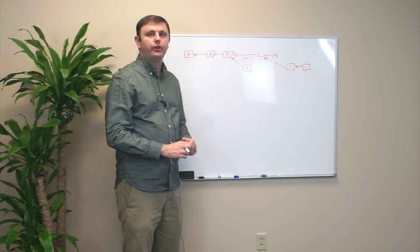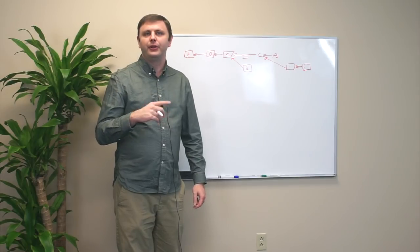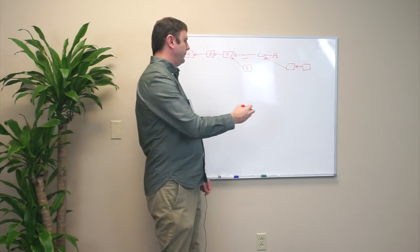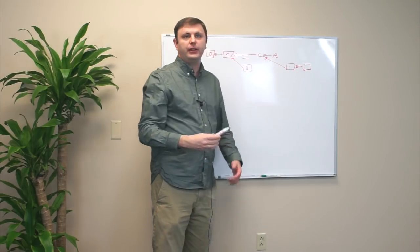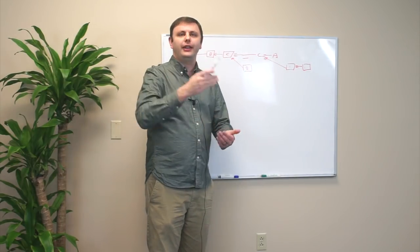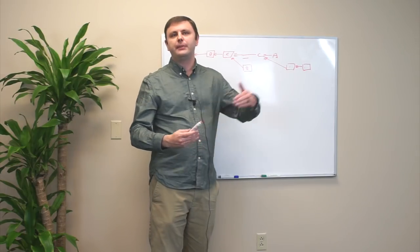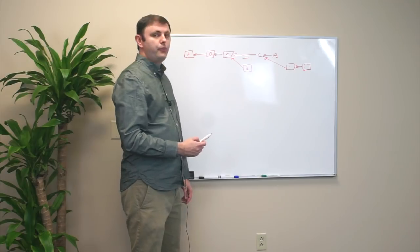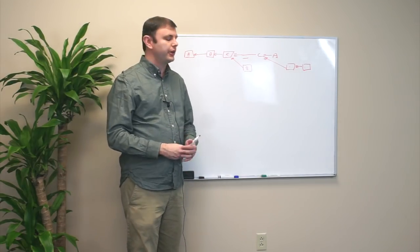This system will work even if only one block producer is operational, one honest one, because that one honest one can support the election that changes the set of producers, that elects the new producers until you eventually get back to full speed, which is a nice property to have because it means that the network can continue.